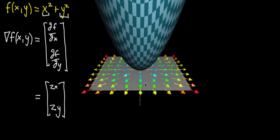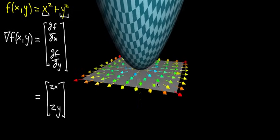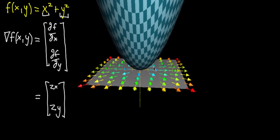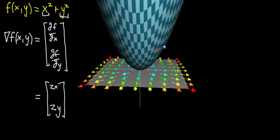So what does this have to do with the graph of the function? There's actually a really cool interpretation. Imagine you're a hiker walking along this graph as if it's a mountain. You're at some point on the graph and you ask: what direction should I walk to increase my altitude the fastest? You want to get uphill as quickly as possible — you certainly wouldn't go down.